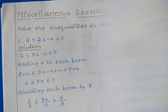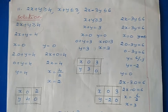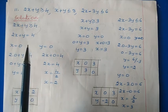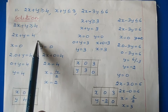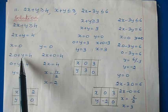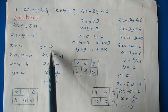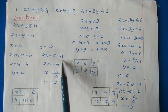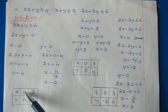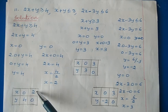Next we will see question 11: 2x plus y greater than or equal to 4, x plus y less than or equal to 3, 2x minus 3y less than or equal to 6. Three inequalities are given. Take the first inequality 2x plus y greater than or equal to 4 and convert to equality: 2x plus y equal to 4. Put x equal to 0: y equal to 4. Put y equal to 0: x equal to 2. So the two solutions are (0, 4) and (2, 0).